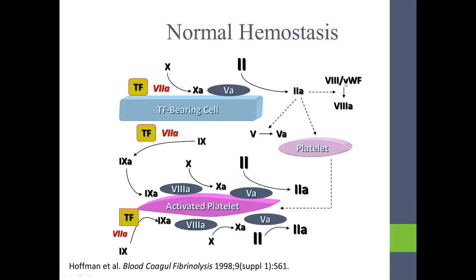Thrombin activates factor V, it can activate platelets, and we've already talked about how it can affect fibrin production. It activates one of its amplifying enzymes by pulling off factor VIIIa from the complex of factor VIII and von Willebrand factor. If you think about it, this enzyme can actually induce its own creation — once it's turned on, it can turn itself on more because it can activate the amplification loop via more factor VIII and more factor V.